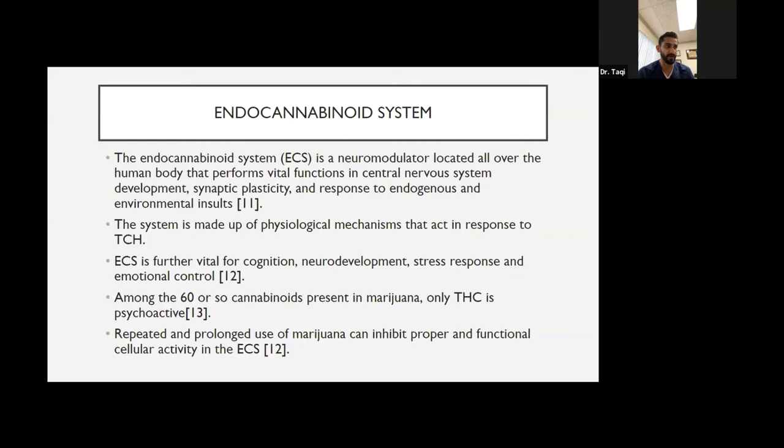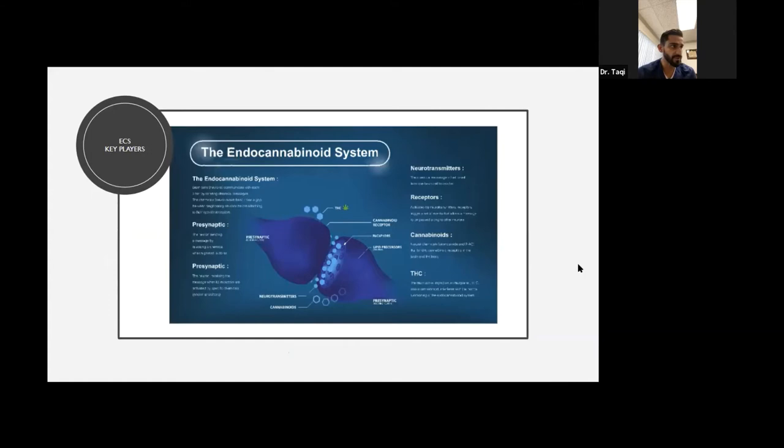The ECS is a neuromodulator located all over the human body that performs vital function in the central nervous system, the synaptic plasticity, and response to endogenous and environmental insults. Synaptic plasticity means the development of the brain as response to an external stimuli. We all have the ability to develop more and more functionality in the brain as we get older and the external factors play a role, but the endocannabinoid system regulates how that will change the development of the brain. The system is made up of physiological mechanisms that act in response to THC. ECS is further vital for cognition, neurodevelopment, stress response, and emotional control. Among the 60 or so cannabinoids present in marijuana, only THC is the psychoactive part of it. The repeated and prolonged use of marijuana can inhibit the proper and functional cellular activity in this whole system.